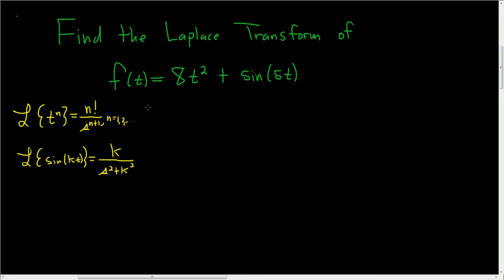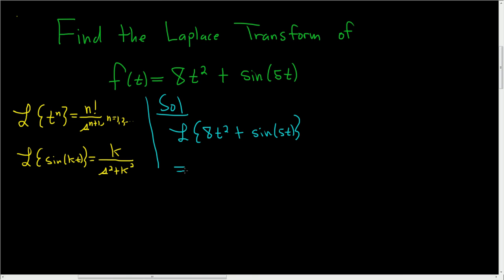Let's go ahead and work this problem out. We'll take the Laplace of the whole thing — the Laplace of 8t squared plus sine 5t. The Laplace transform is linear, so we can pull numbers out. This is 8 times the Laplace transform of t squared plus the Laplace of sine 5t.